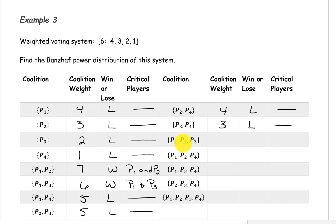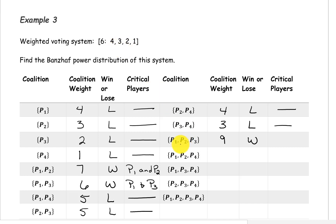The coalition containing players 1, 2, and 3 has a weight of 4 plus 3 plus 2, which is 9. This is a winning coalition. Removing player 3 brings the weight to 7 — still winning, so player 3 is not critical. Removing player 2 gives 4 plus 2, or 6 — still winning, so player 2 is not critical. Removing player 1 gives 3 plus 2, or 5 — a losing coalition, so player 1 is critical.